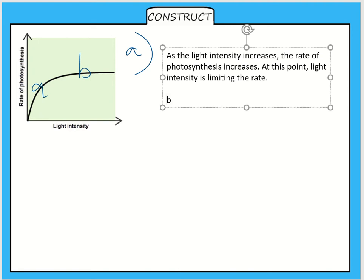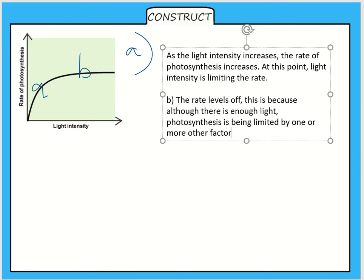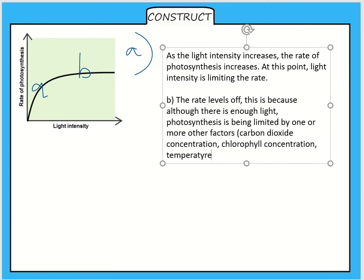Then at point B we can say that the rate levels off. This is because although there is enough light, photosynthesis is being limited by one or more other factors. And this would be your carbon dioxide concentration, chlorophyll concentration, temperature, or water availability. So you've got five factors in total. If it's not light intensity then it's going to be one of the others.